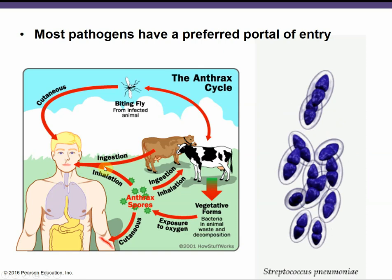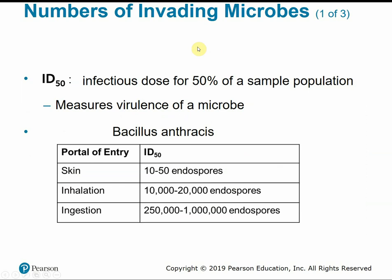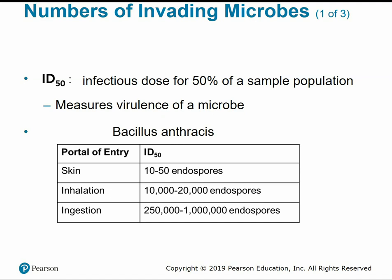Anthrax, for example, can cause infection through ingestion, inhalation, or cutaneous contact. Generally, if only a few microbes enter the body, they'll probably be overcome by our host defenses. However, if a large number gains entry in a relatively short period of time, they're more likely to overpower our host defenses.